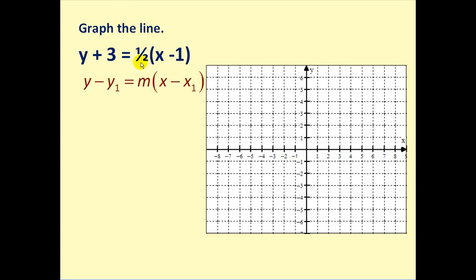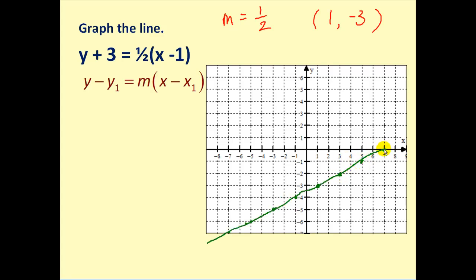Let's graph one more line. The slope is one-half. To identify the point: if we see minus one, the x-coordinate is positive one; if we see plus three next to y, the y-coordinate is negative three. So we plot the point (1, -3), and from there go up one, right two — repeating that several times gives us our line.